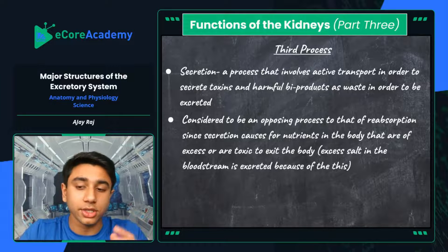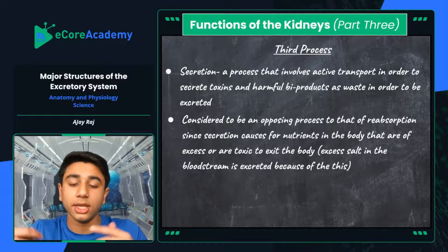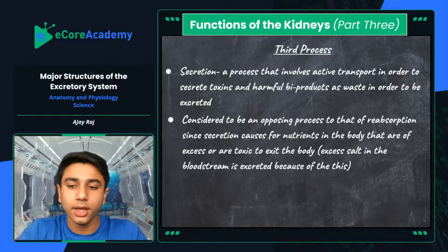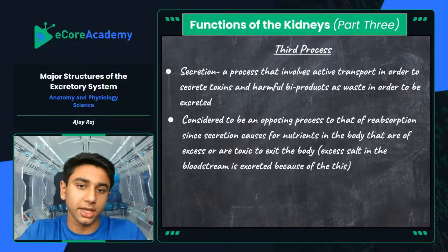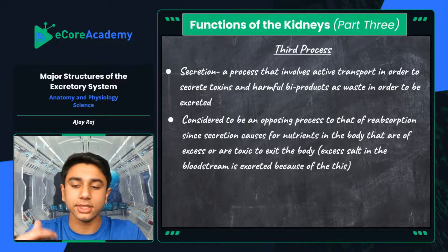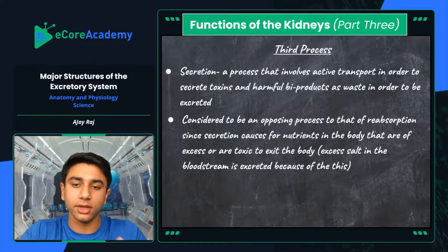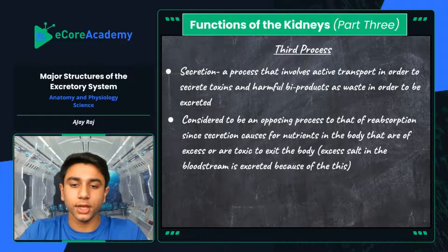Reabsorption sends material back into the body, while secretion makes sure it exits the body, going directly to the bladder so it can be excreted. Once something enters the bladder and goes into the urethra, it's not coming back into the body — the potential to be reabsorbed is definitive within the kidney itself. Secretion causes nutrients that are in excess or are toxic — such as excess salt in the bloodstream — to exit the body.